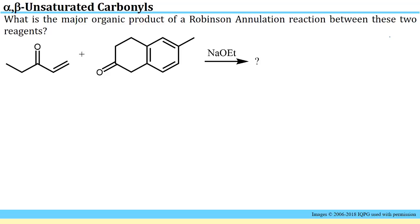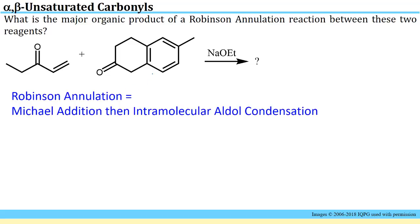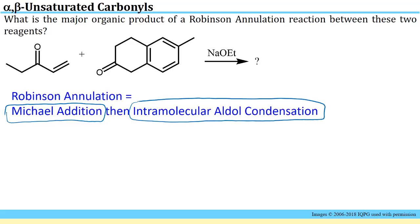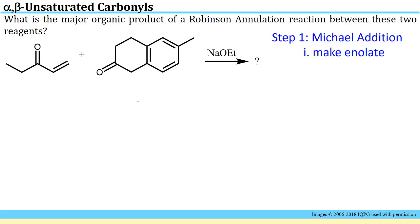One of the more involved applications involving an alpha-beta unsaturated carbonyl is the Robinson annulation. This problem asks us to identify the major organic product of a Robinson annulation between two particular starting materials. The Robinson annulation is not really a new reaction — it is simply two reactions we learned previously put together. The first step is a Michael addition, which we discussed earlier in this homework set, and the second step is an intramolecular aldol condensation, meaning an aldol condensation occurring between two pieces within the same molecule. It makes sense to break this down carefully, one step at a time.